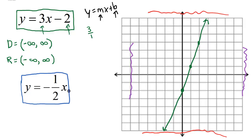Now let's take a look at the blue line. Referring to y equals mx plus b, nothing is being added or subtracted, so the y-intercept is zero — plot that on the y-axis at zero. The slope is negative one over two, so we go down one because it's negative, then over two to get our next point. We repeat that — down one, over two — and then connect the dots.